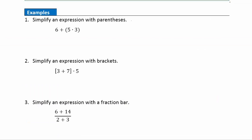Example one: simplify the expression with parentheses. We have a multiplication problem inside the parentheses — 5 times 3. Since it's in a grouping, we perform that operation first: 5 times 3 is 15. Then we add 6 and 15 together, giving a final answer of 21.